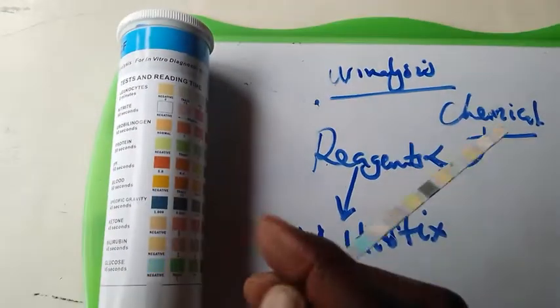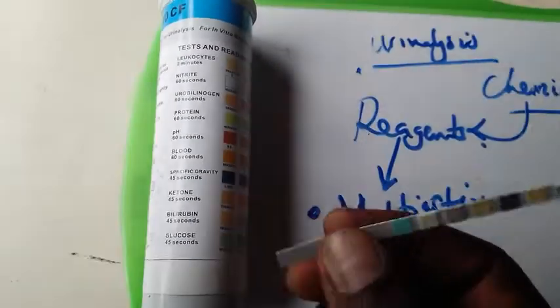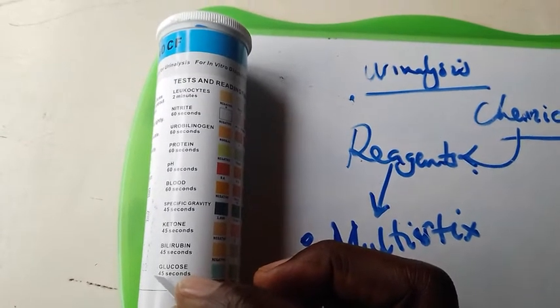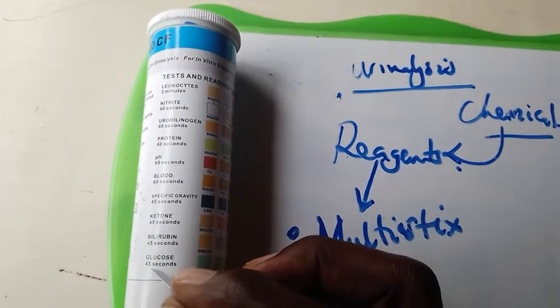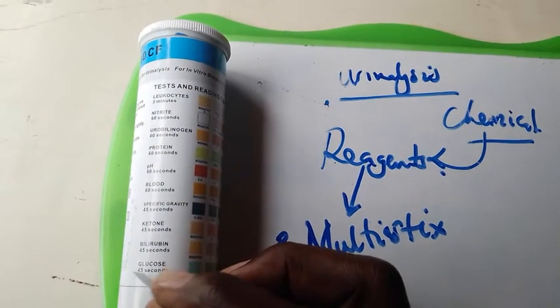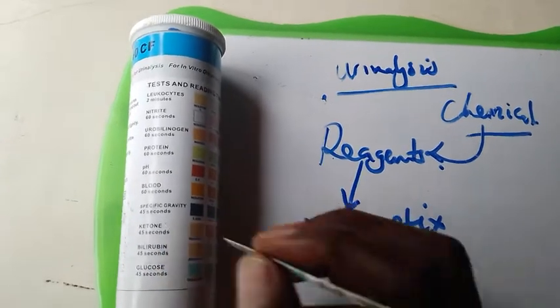What about other readings? What do they entail? You really have to look at the time here. This one here, glucose, it changes at 45 seconds. After 45 seconds, that's when you should read after looking at your nurse's watch. You read this after 45 seconds, same as bilirubin and ketones.